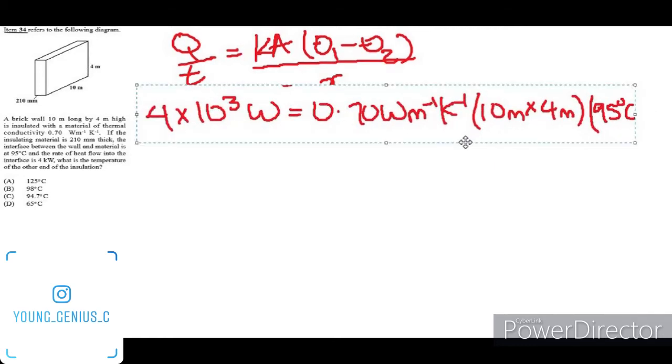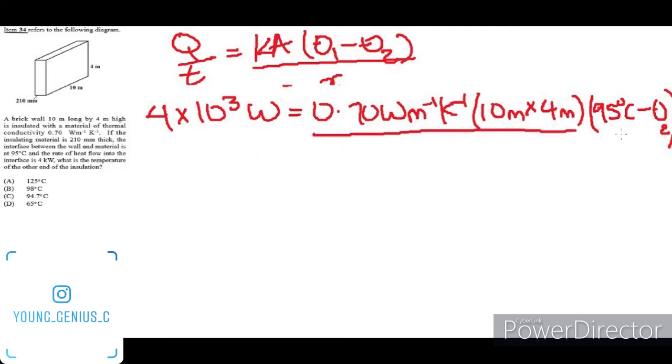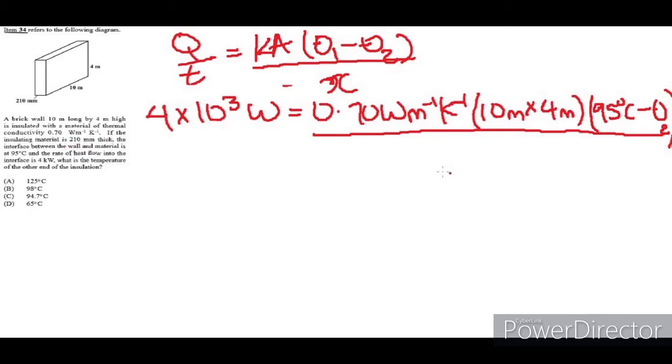Minus theta 2, which would be the lower temperature, all over x, the distance the heat travels. We're told that the brick wall was 210 millimeters thick, so it travels 210 millimeters. We're changing that to meters, it's 210 times 10 to the minus 3 meters.